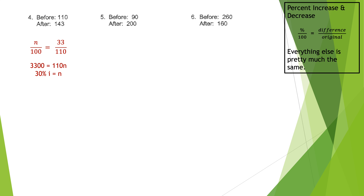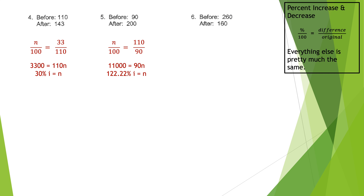The amount of change from 90 to 200 is 110, and the original amount is 90. Setting up: n over 100 equals 110 over 90. Cross multiplying gives 11000 equals 90n. Dividing by 90 gives n equals 122.22 percent increase — rounding to the nearest hundredth. Clearly it's an increase since you're going up from 90 to 200.